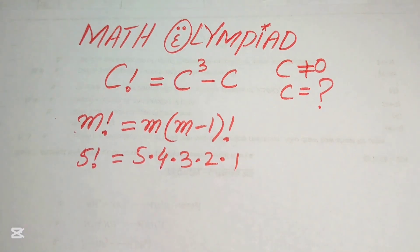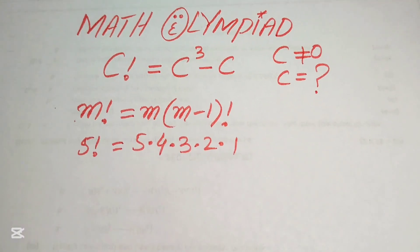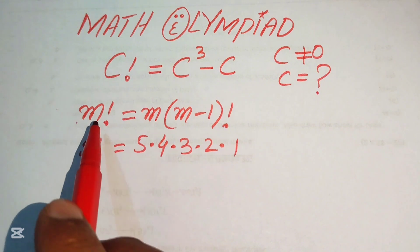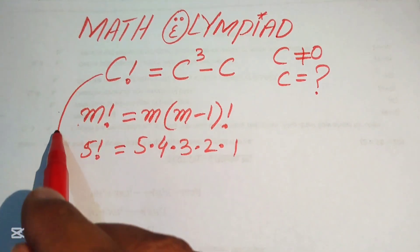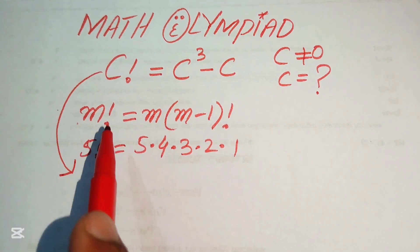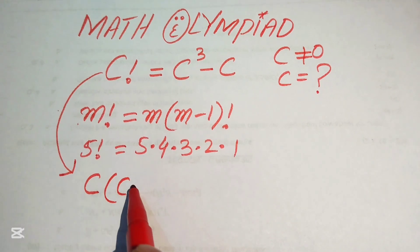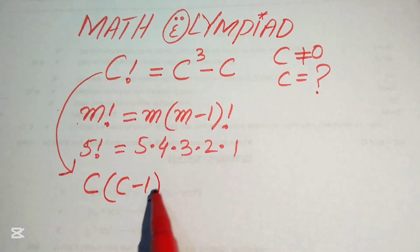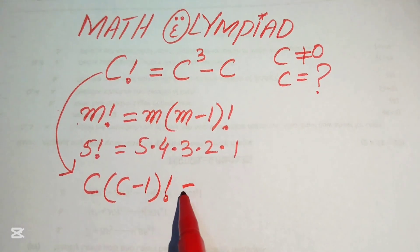In the next step, we use this formula on our term. So c factorial is written as c times (c minus 1) factorial.